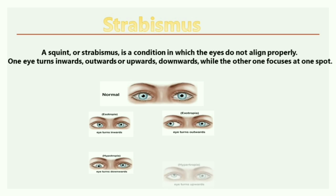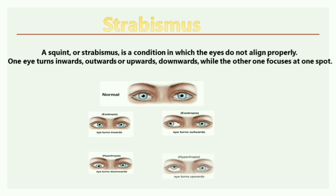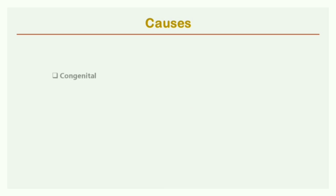When your eyes turn upward, it is known as hypertropia. The causes of strabismus: the first is congenital, also called bipolar or infantile strabismus.